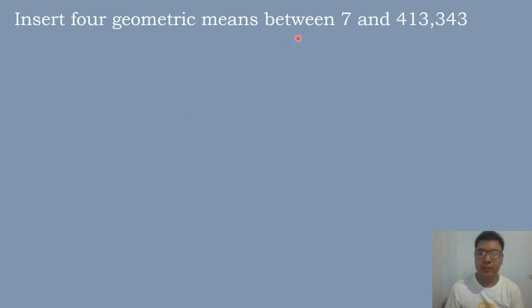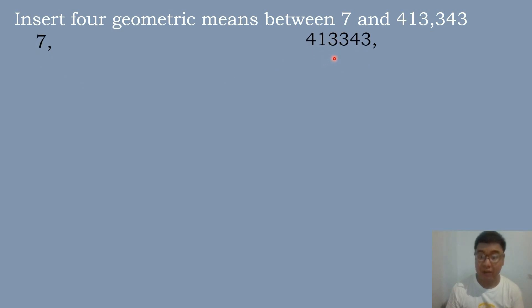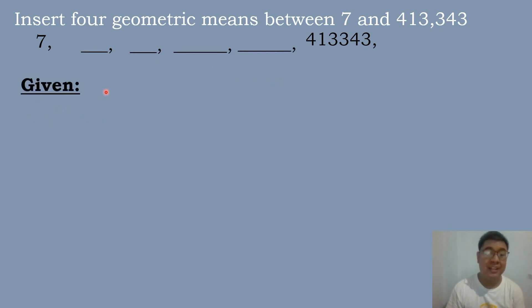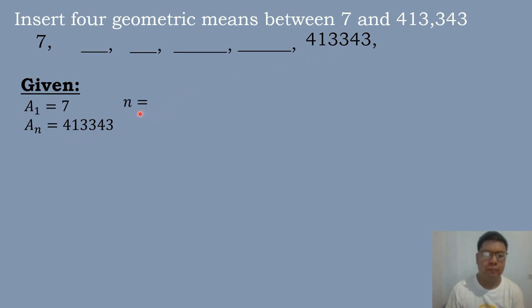Let's solve our first example: insert 4 geometric means between 7 and 413,343. We write 7 and 413,343, then insert 4 blanks between those two numbers. We identify the given: a sub 1 equals 7, a sub n equals 413,343, and n equals 6, since counting all terms gives us 1, 2, 3, 4, 5, 6.